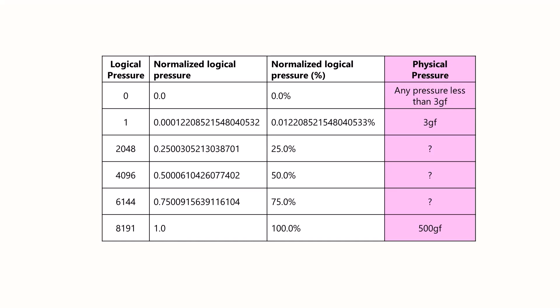The logical pressure value of 8,191 represents the maximum pressure. And from the spec sheet, we know that this corresponds to 500 gram force. The logical pressure value of 1 represents the initial activation force, which corresponds to 3 gram force. The logical pressure of 0 is also related to the IAF. It represents any physical pressure that is less than 3 gram force.